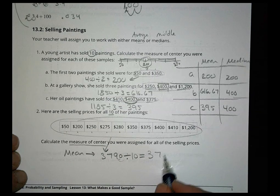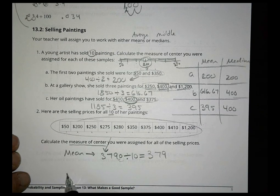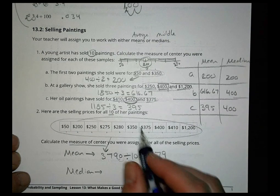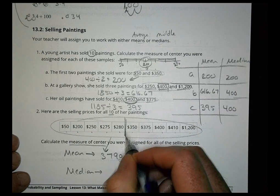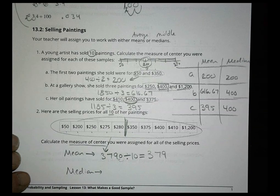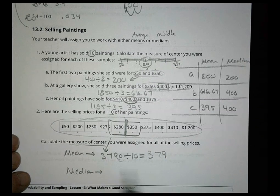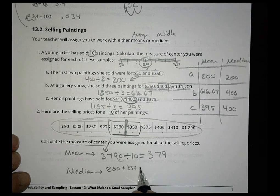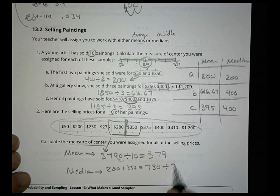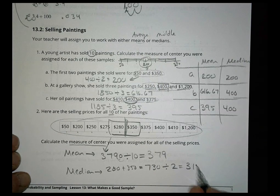For the median with 10 data points, the middle falls between the 5th and 6th values, which are 280 and 350. To find the exact midpoint: 280 plus 350 equals 630 — wait, 730 — divided by 2 equals 315. So the median is 315.